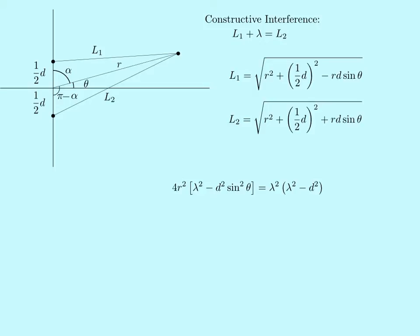That means that the term in square brackets on the left-hand side of the equation must also be pretty close to zero. In fact, I'm going to assume that it is exactly equal to zero, which turns out to be an excellent approximation. Now, if the term in brackets is zero, that means that lambda must be equal to d sine theta, give or take a minus sign.